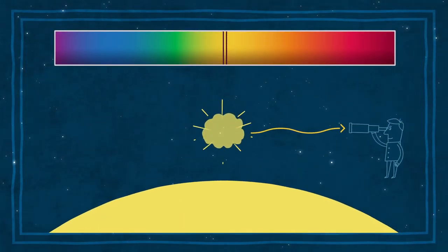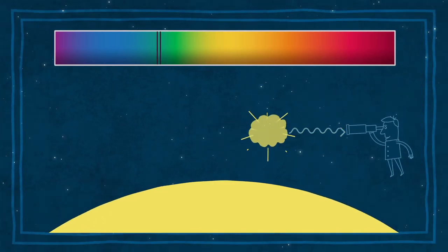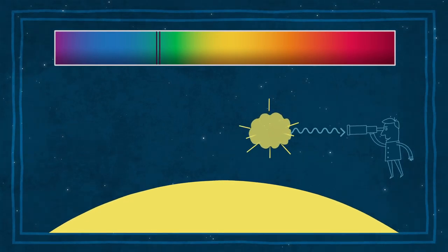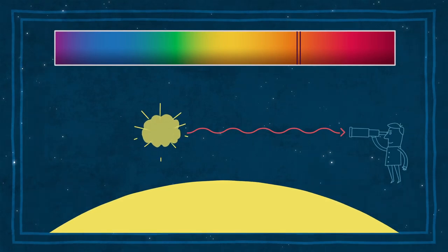Light waves also experience the Doppler effect. Gas moving towards the observer produces spectral lines shifted to the blue. Gas moving away produces lines shifted to the red.